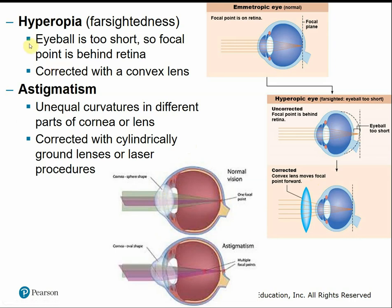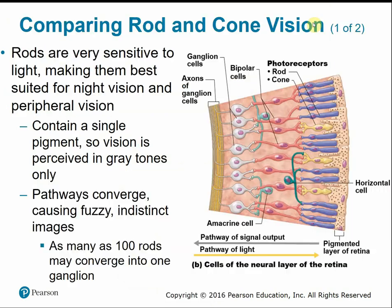There are two types of photoreceptors in the retina. Rods are very sensitive to light and are more suited for dark night vision or peripheral vision. Rods only contain one pigment, so they receive light signals in gray tones. Many different rods converge on single output ganglion cells, so there can be a lot of background noise.